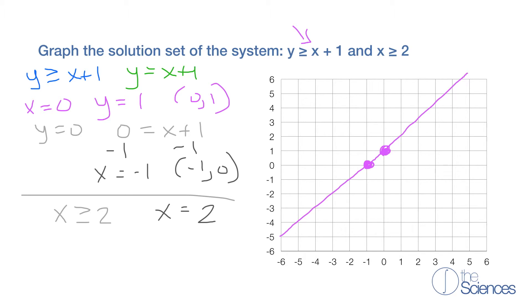Now we have x is equal to 2, which is here. Since it's a vertical line, it goes up and down. So here we're going to graph x is equal to 2.